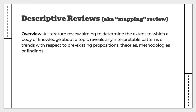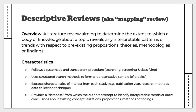Next, we have descriptive reviews, which are sometimes referred to as mapping reviews. These aim to determine the extent to which a body of knowledge about a topic reveals any interpretable patterns or trends with respect to pre-existing propositions, theories, methodologies, or findings. Descriptive reviews follow systematic and transparent procedures, use structured search methods to form a representative sample of articles, and extract key characteristics such as year of publication, target audience, or research method used. In the end, they provide a sort of database from which authors attempt to identify trends or draw conclusions about existing knowledge.